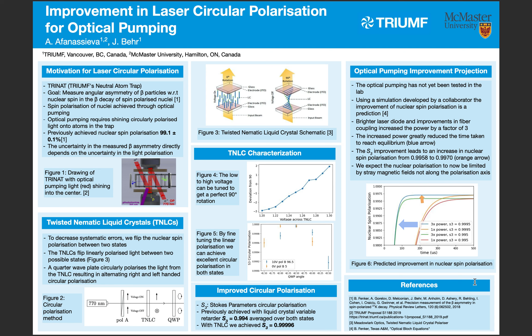I also have a prediction for how this improvement will affect the optical pumping. Since I wasn't able to measure the optical pumping directly in the lab, I used a simulation provided by one of my previous collaborators. The improvement in circular polarization led to a predicted increase in nuclear spin polarization from 0.9958 to 0.9970.